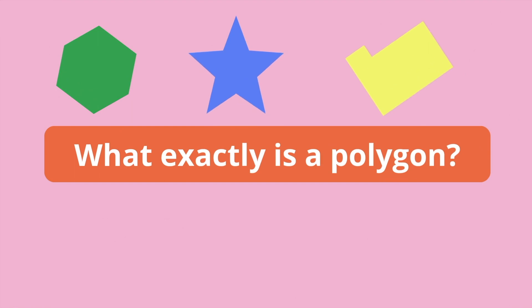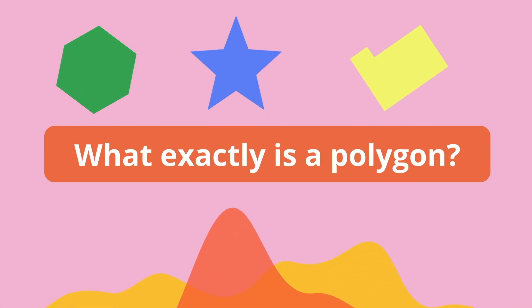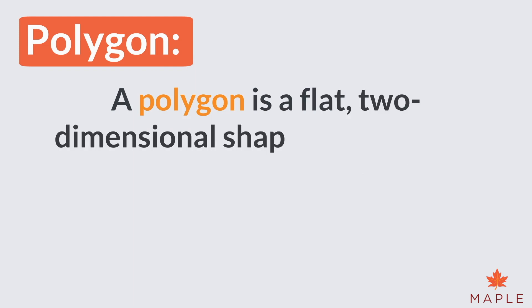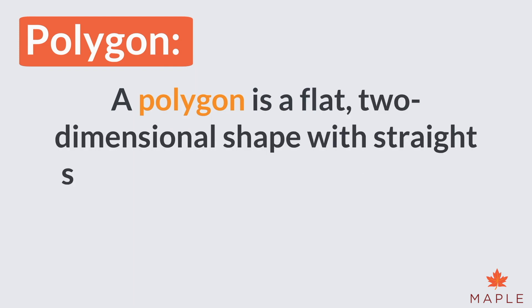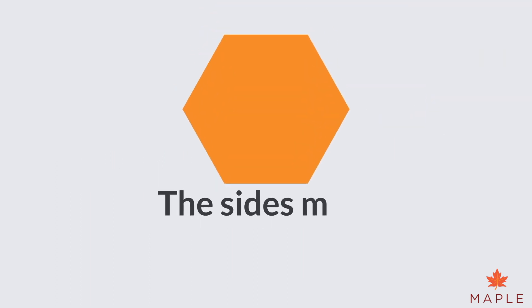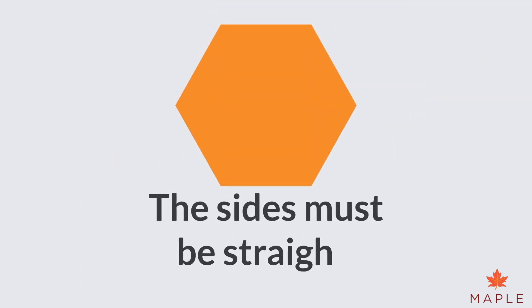You may have heard the word polygon many times at school, but what exactly is a polygon? A polygon is a flat, two-dimensional shape with straight sides that is fully closed. All the sides are joined up, and the sides must be straight.